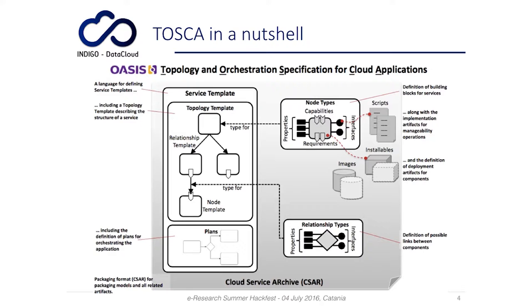The nodes are linked by relationships. Inside the topology template you can find not only node types but also relationship types, which define how the components of your service are linked to each other. There are different types of relationships such as hosted on, connected to, and so on.